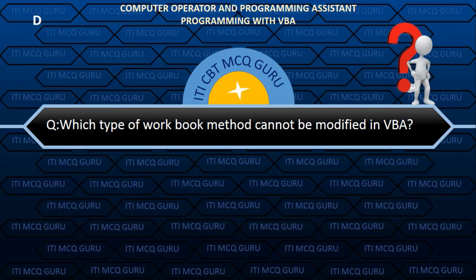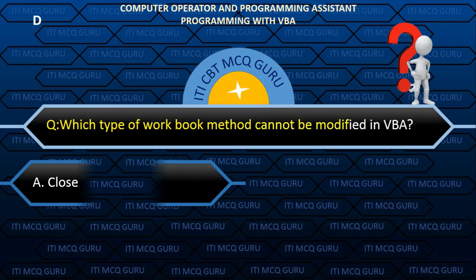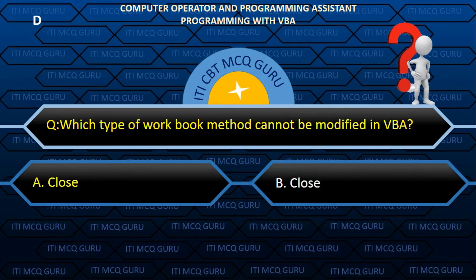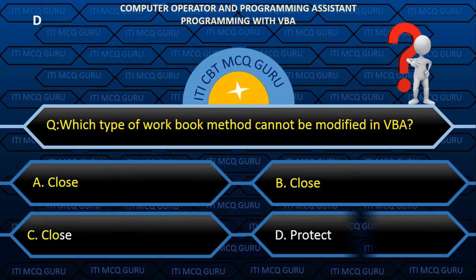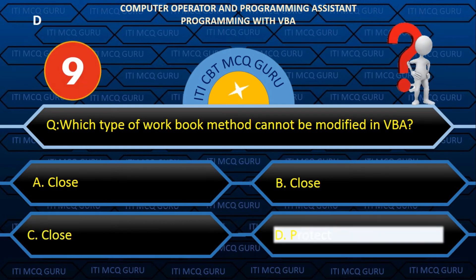Which type of workbook method cannot be modified in VBA? Answer: D. Protect.